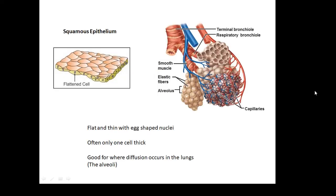The squamous epithelium — the squashed epithelial cells — are flattened cells, flat and thin, with an egg-shaped nucleus. Very often only one cell thick, and they are good for where diffusion occurs in the lungs. For example, the alveoli, where oxygen diffuses in and carbon dioxide diffuses out — this is squamous epithelial cells.